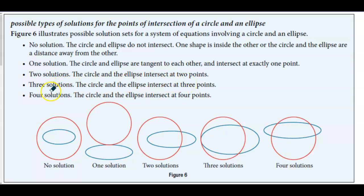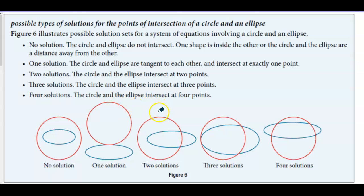We have three solutions where the circle and the ellipse intersect at three points. And then we have four solutions where the circle and the ellipse intersect at four points.